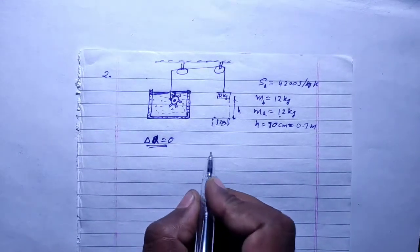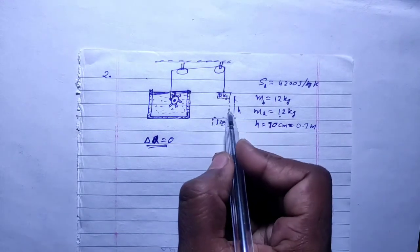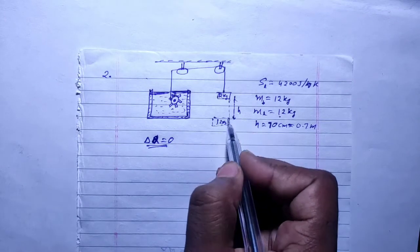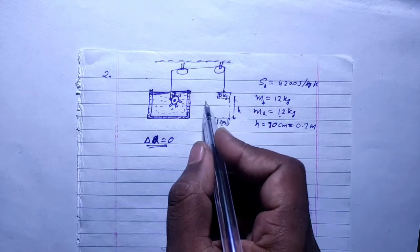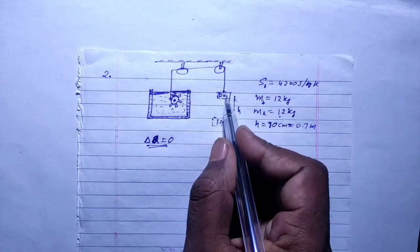The other thing is that the block falls 70 cm. So the potential energy is decreased. Here the potential energy is MGH.